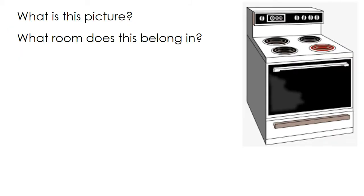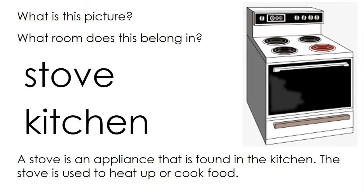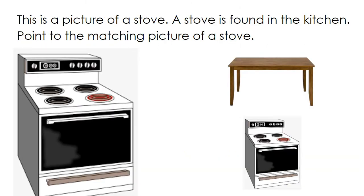What is this picture? This is a stove. And what room does this belong in? It belongs in the kitchen. A stove is an appliance that is found in the kitchen. The stove is used to heat up or cook food. This is a picture of a stove. A stove is found in the kitchen.